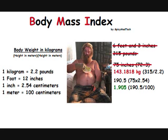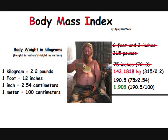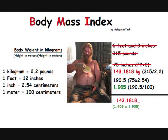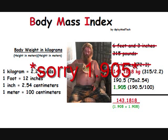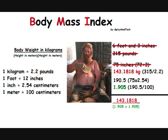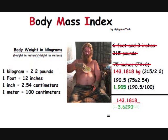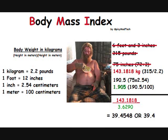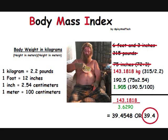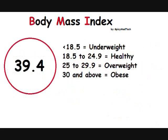Now that we have his weight and height in the units we need, let's divide. 143.1818 divided by 1.905 squared. 1.905 multiplied by itself is 3.6290. Dividing these numbers, we get 39.4548, rounded down to 39.4. Let's take 39.4 and look at the BMI ranges.